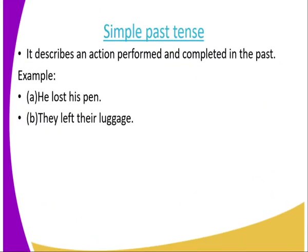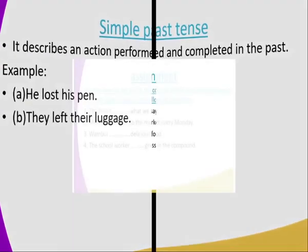The simple past tense describes an action performed and completed in the past. These are tenses used to describe actions that were performed in the past — it could be yesterday or early in the morning. It describes something that happened some time back. For example: 'He lost his pen.' The word 'lost' describes an action that happened in the past. Another example: 'They left their luggage.' 'Left' means the luggage was left there either yesterday or some days ago.